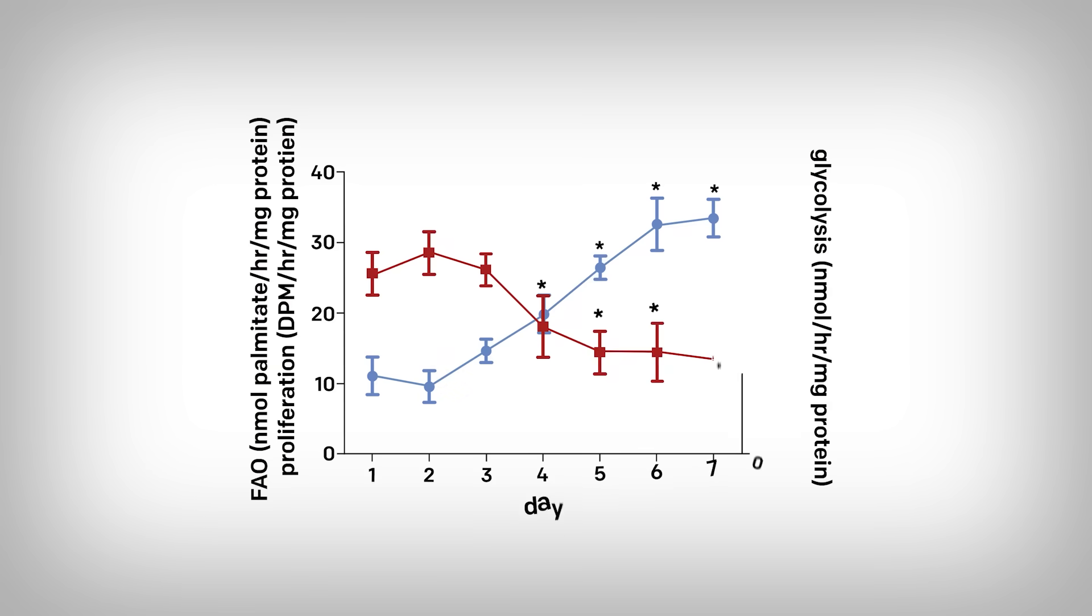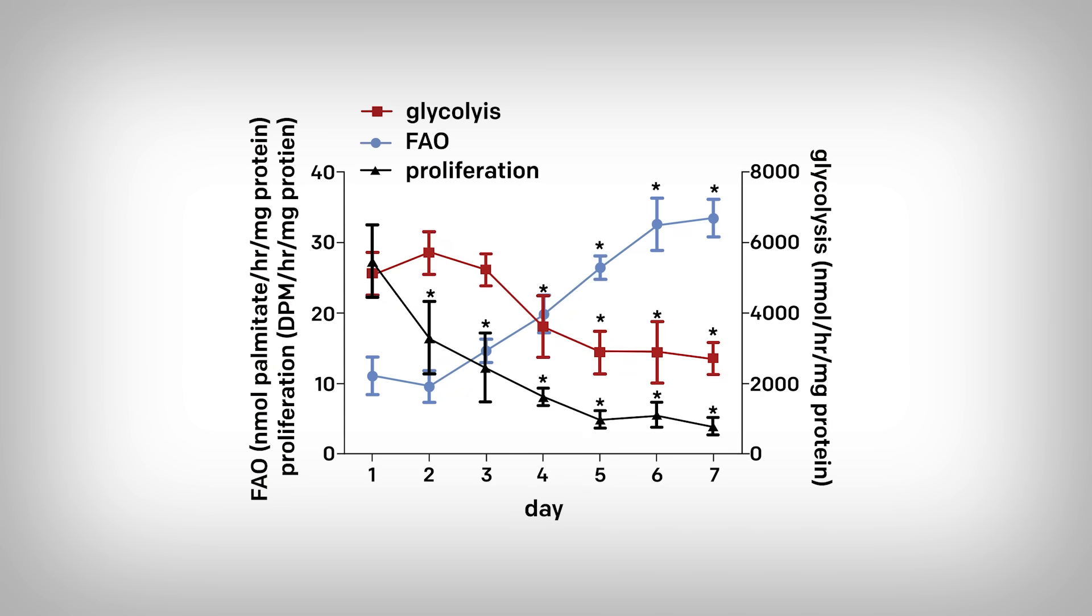In fact, we can see that here. In this experiment, the researchers assessed what metabolism the endothelial cells were utilizing when in a proliferative stage, akin to stress in this context, and in a less proliferative stage, like in quiescence. You can see there's a direct relationship between the downward trend of proliferation in line with the reduced glycolysis, as well as increased fatty acid oxidation. So that's fat metabolism.